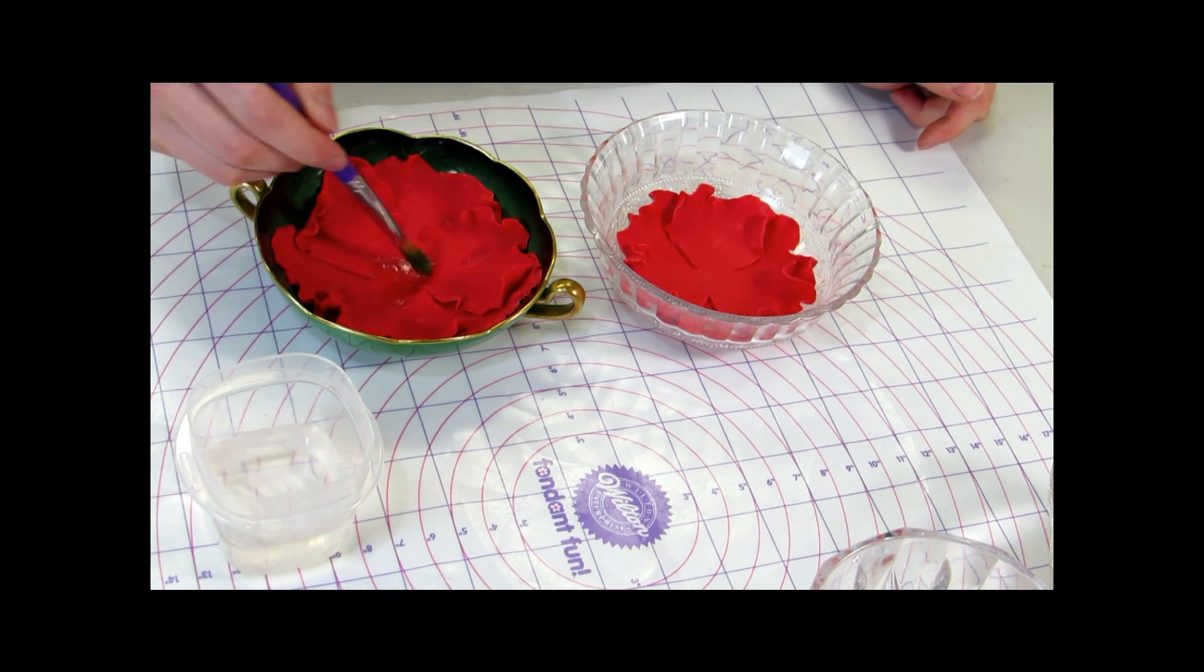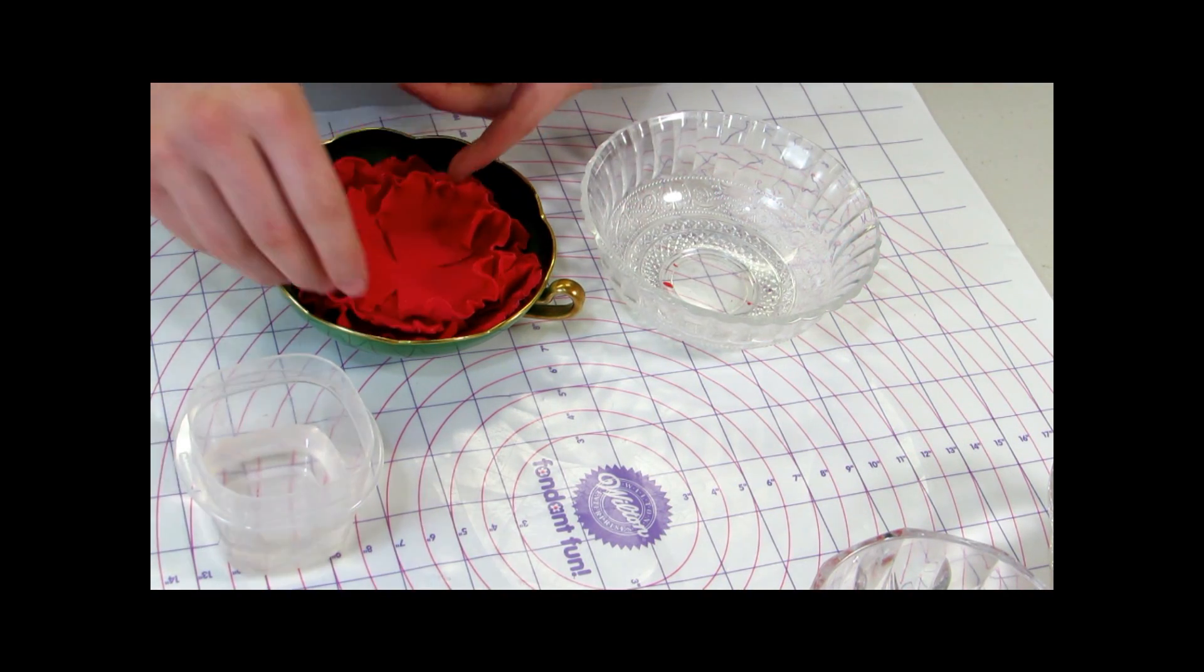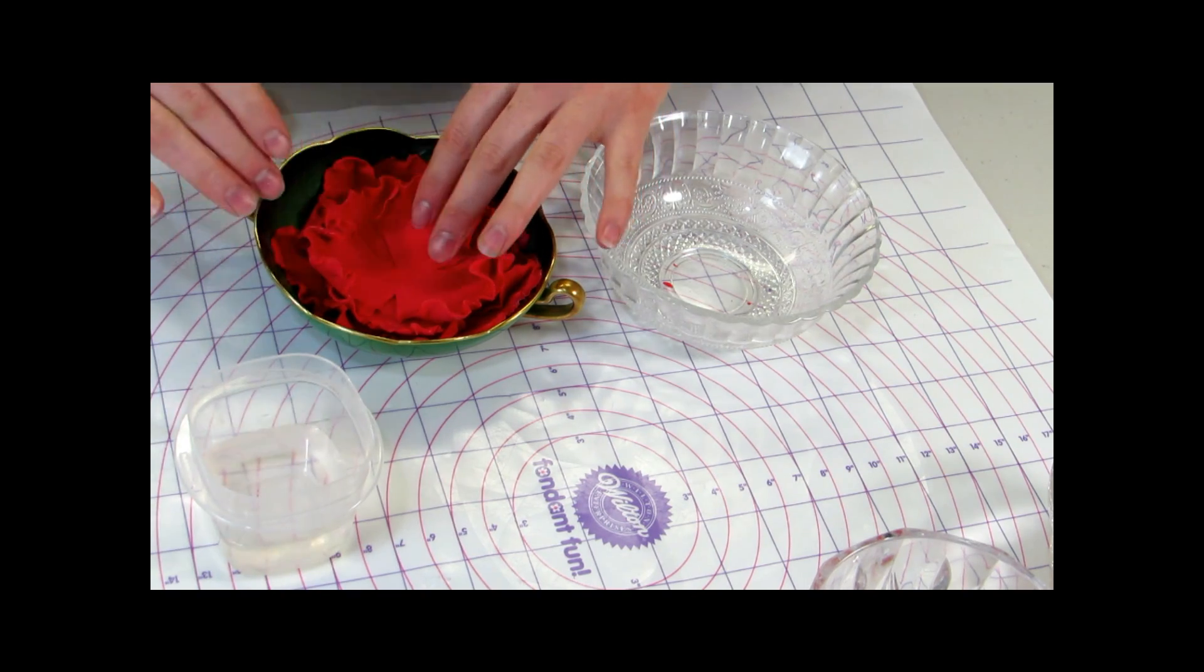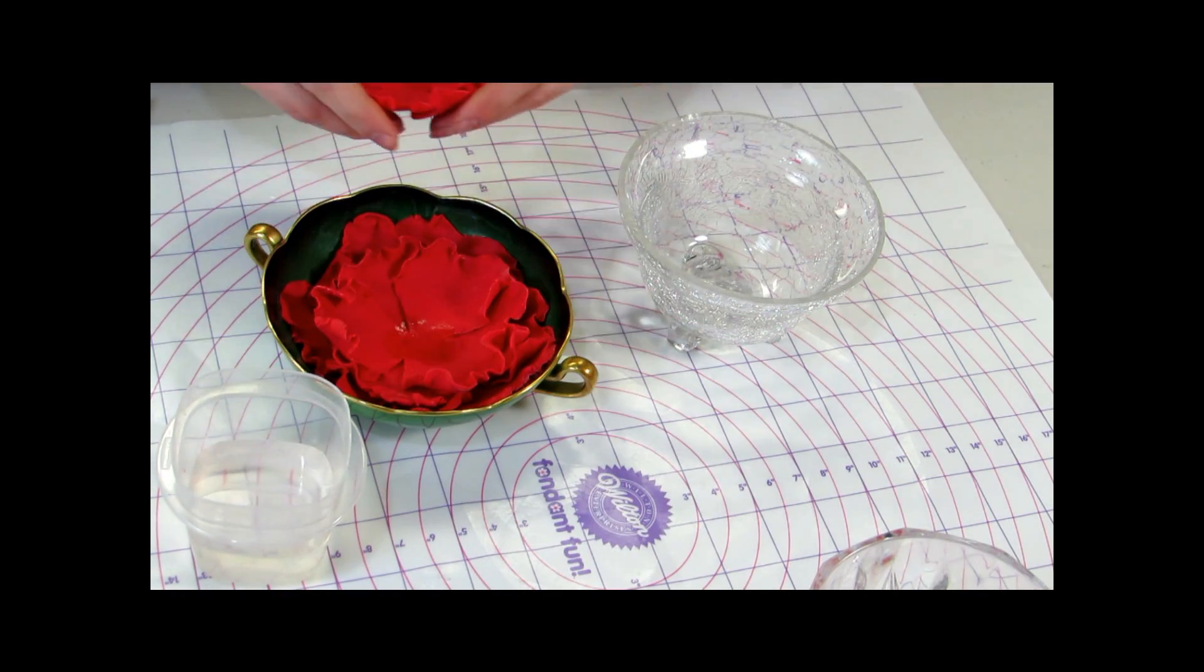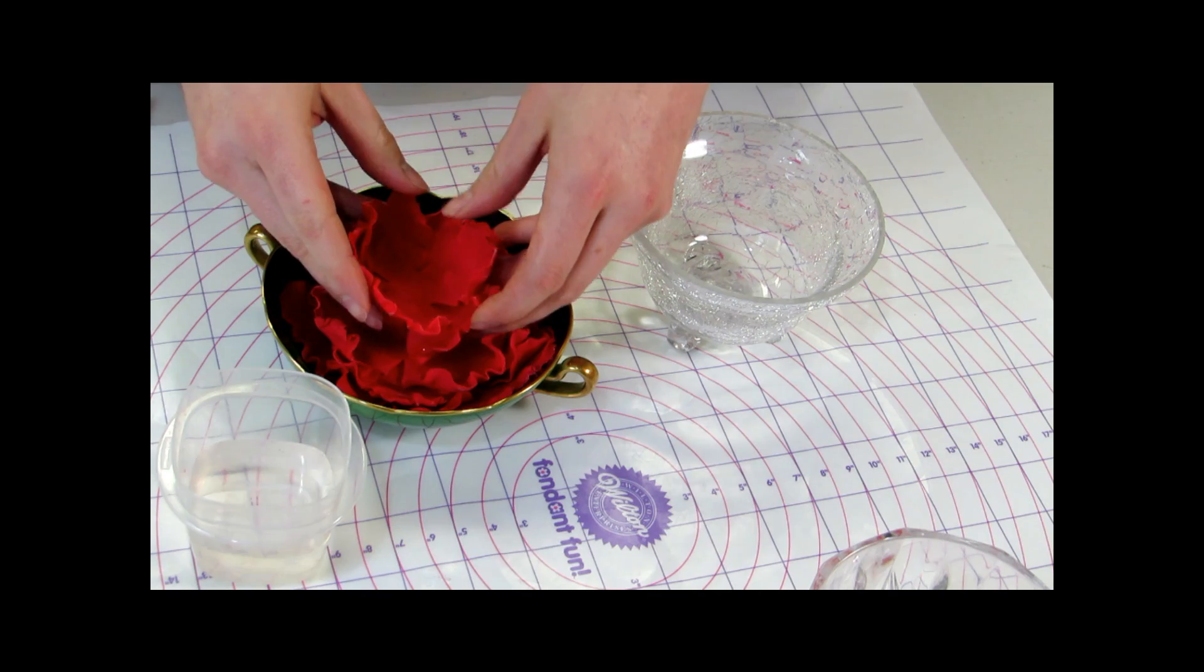Once those have dried overnight, you can use a little bit of water to help assemble your flowers together. Starting out with the largest flower and then going right down to the smallest one.